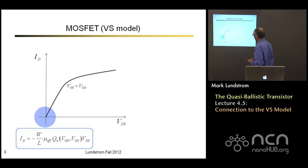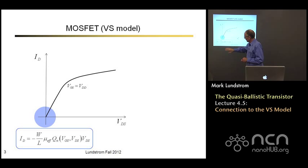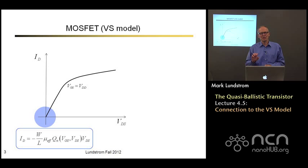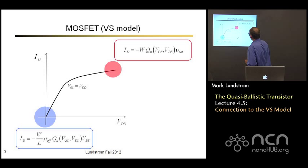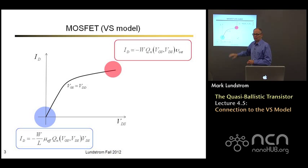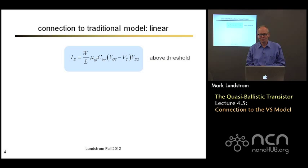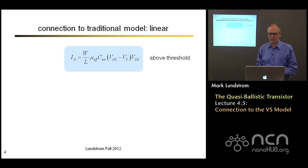Now if we look at the traditional model, we can express it in a similar way. The key parameter in low bias in the linear regime is the effective mobility — the average mobility of electrons in the inversion layer. The key parameter under high drain bias is the high field saturated velocity. The MOS electrostatics is the same; the Poisson equation doesn't really care too much about transport. So let's see if we can make this connection.